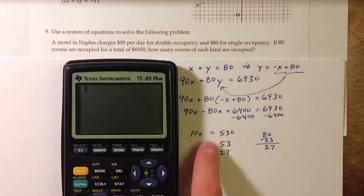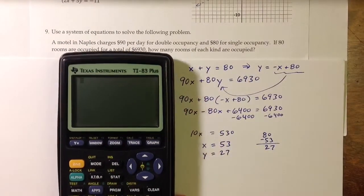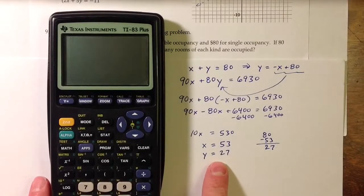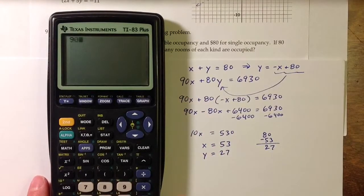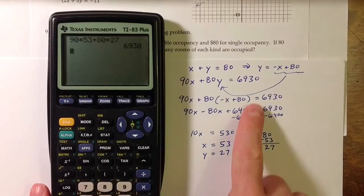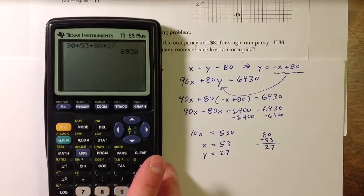To make sure that the second equation is true for the values that we found, let's use a calculator to deal with some of this arithmetic. I have 90 times 53, $90 for each double occupancy room, plus 80 times 27. And that should, and it does, equal the 6,930.